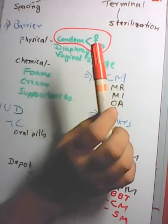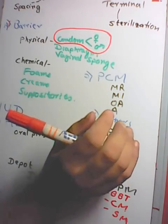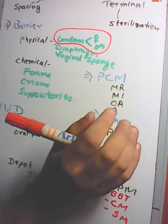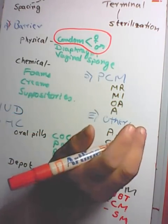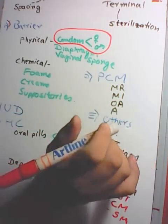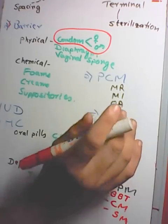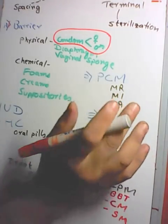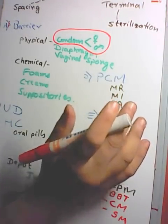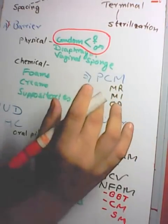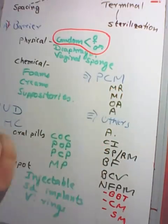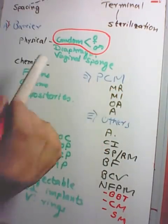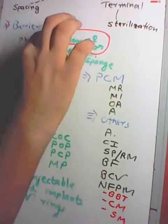Condoms are made of latex. They are made by Hindustan Latex of Trivandrum and London Rubber Industries of Chennai. Female condoms are made of polyurethane and have an internal ring and an outer open end.